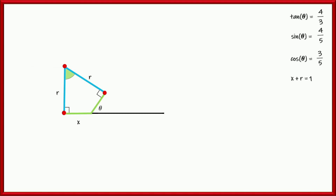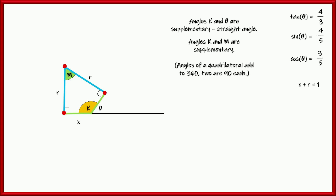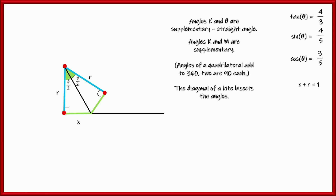So I've got this pretty little kite here. This is our angle theta from before — where we have sine, cosine, and tangent. Now theta and this angle are a linear pair, so they're supplementary. The angle in green — let's call it M. K and M are also supplementary because we have a quadrilateral, a kite. Two of the angles are 90 each, making 180, leaving 180 left. So theta is exactly the same as angle M.